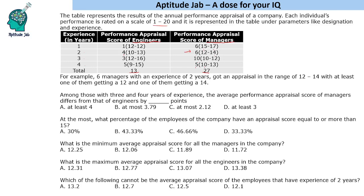Similarly, if there are 10 people, 1 will get 10 and 1 will get 12, but we do not know about the other 8. It could be some people getting 10, some getting 11, some getting 12. So this is how we need to interpret the table.